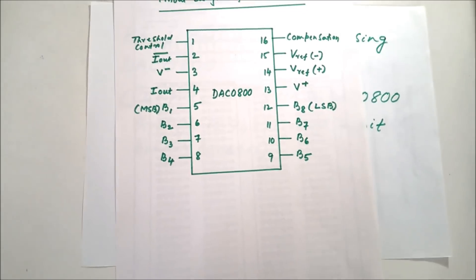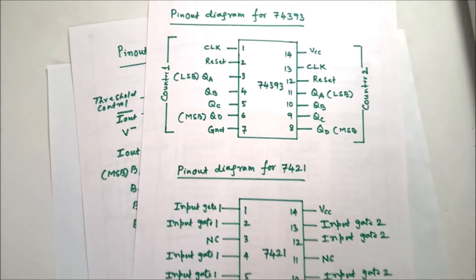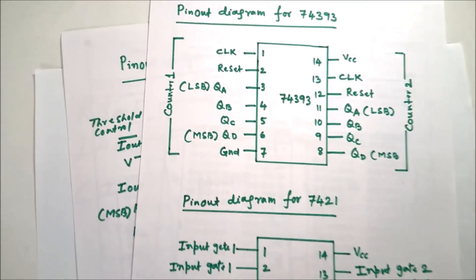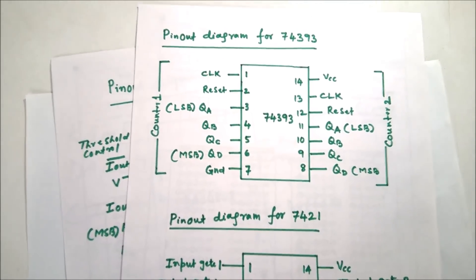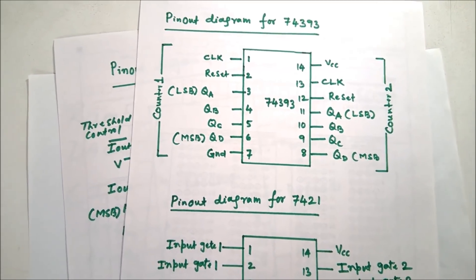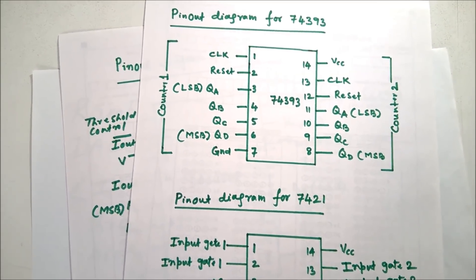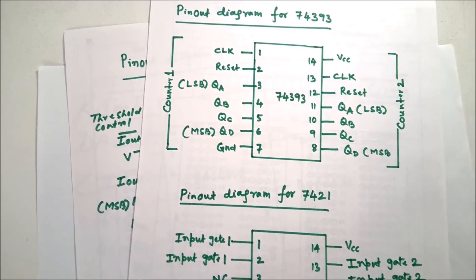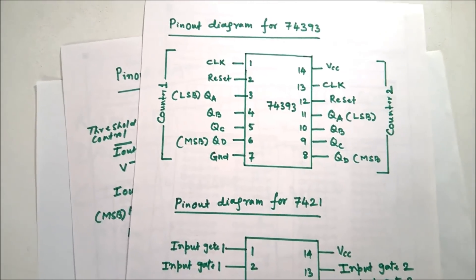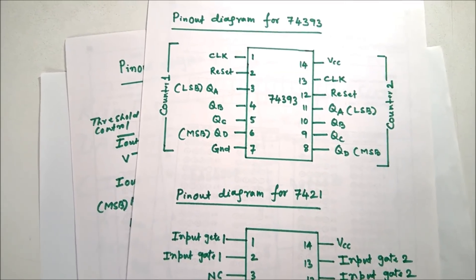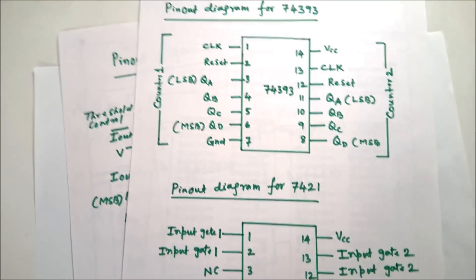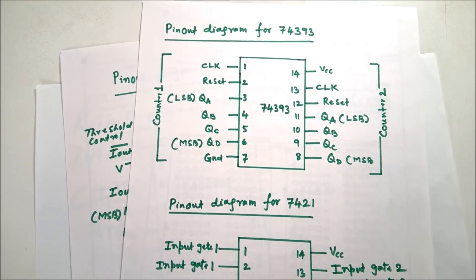Here you can see the 74393 pin diagram. There are two counters in this IC, with two clocks and two reset pins. These are two completely separate 4-bit counters. We will be using both 4-bit counters and giving their output as input to the DAC.